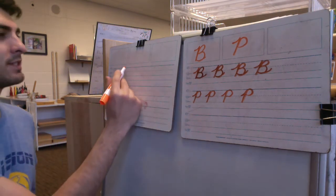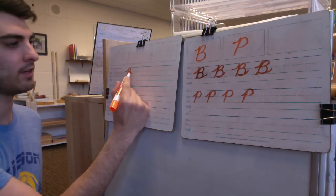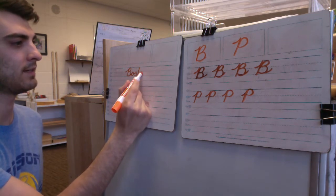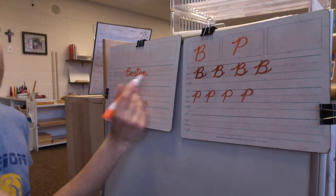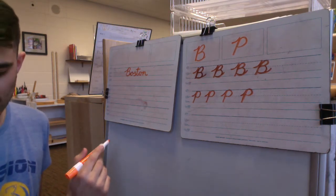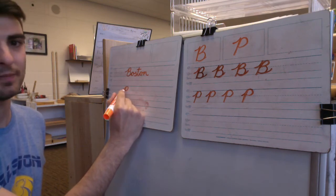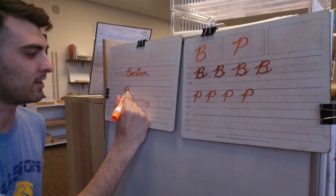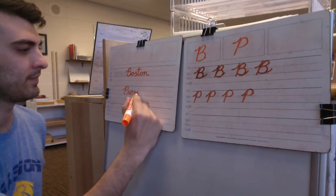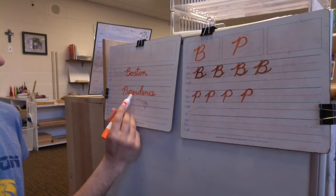All right, so Boston, uppercase B. And since it comes down, I am going to connect it directly to the O and then the S-T-O-N. Boston. And for P, I will write Providence. Capital P. Since it's up here, I'm not going to connect, so I'll start my lowercase R down here. P-R-O-V-I-D-E-N-C-E. Providence.